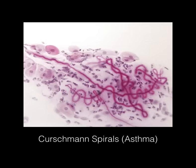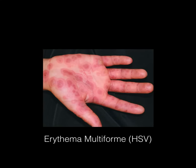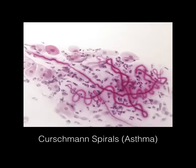Here we have Curschmann spirals, which are seen in the sputum of asthmatic patients. Also, not pictured, but you could also see Charcot-Leyden crystals — so Google that when you have some time.